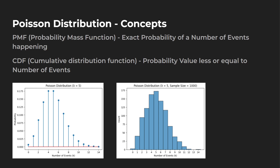The two probabilities we're going to be taking a look at: first is the probability mass function (PMF), which gives the exact probability of a specific number of events happening. Then we'll also look at the CDF, the cumulative distribution function — the probability that a specific value or less occurs. We'll also be plotting two different graphs.